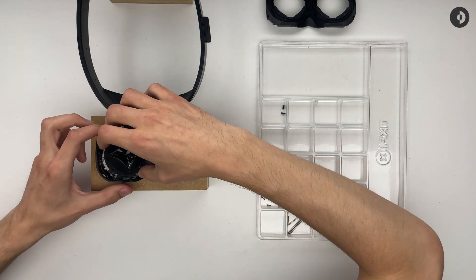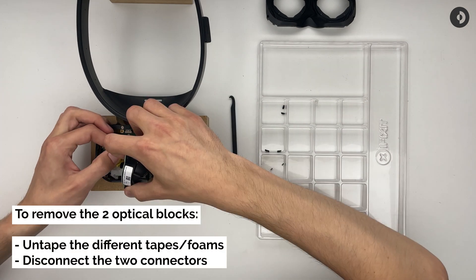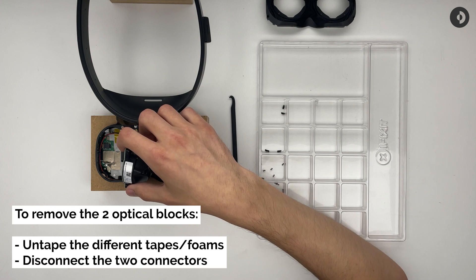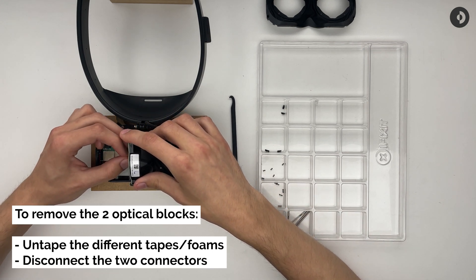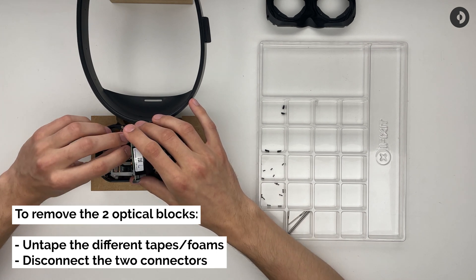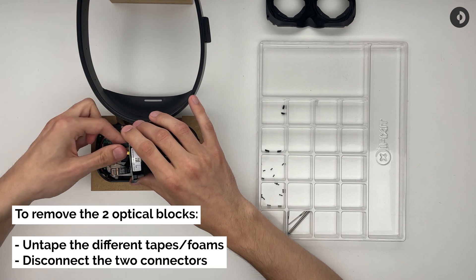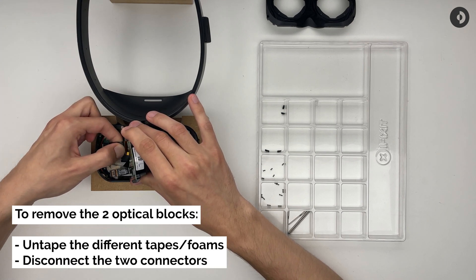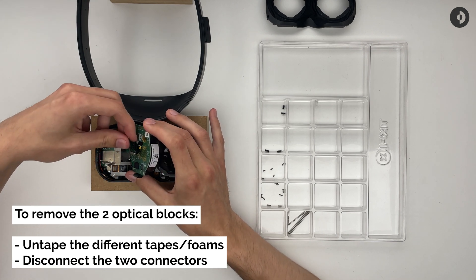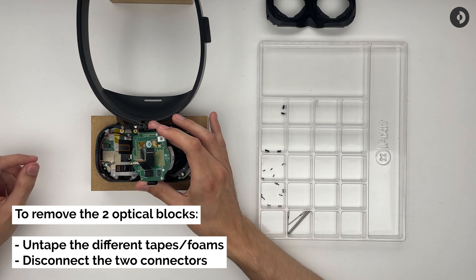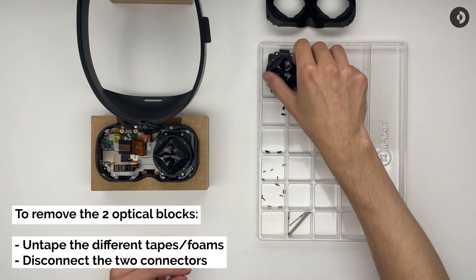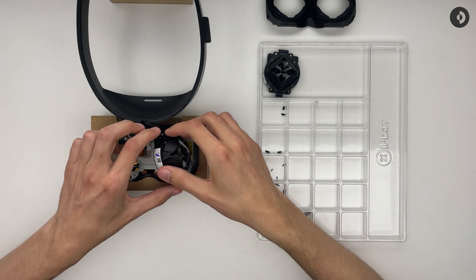You can now gently lift up the left optical block and remove the isolating tape covering the connectors. Once you're rid of that, you will have to disconnect the flexible circuits from the optical block. Separate the connectors and gently pull on the FPCs, as they still might be binded to the optical block with adhesive. You can store this optical block to the side and repeat the operation with the second one.